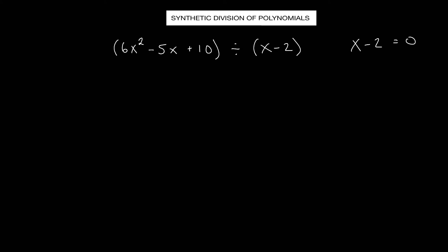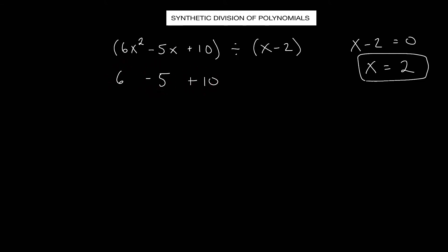So x minus 2 equals zero, and then solve for x. By adding 2 to both sides, we get x equals 2. This is going to be what you're dividing by. So what you do is take these coefficients — remember, a coefficient is the number attached to your variable, and you have to take the sign as well. So negative 5 is the coefficient here of the variable x. You're going to take these coefficients and write them out like this, and then take this divisor we just solved for and put it down here: 2.